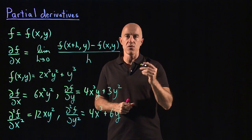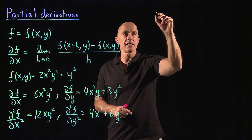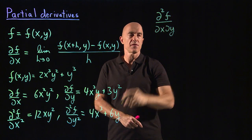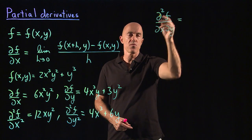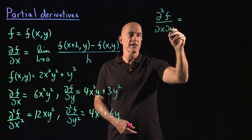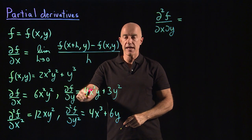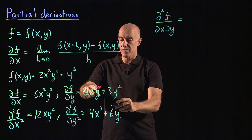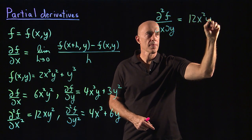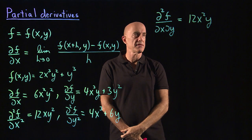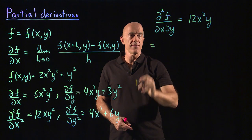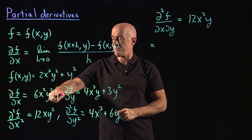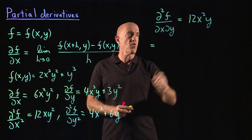Something different here is something called the mixed partial. If we want the second derivative — partial squared f with respect to x and y — this is called the mixed partial. You take the derivative of f with respect to y, and then take the derivative of that with respect to x. We would get 12x²y, because the derivative of y with respect to x is 0. On the other hand, we could reverse the order: take the derivative of f with respect to x first, and then differentiate with respect to y. We also get 12x²y — the same answer.